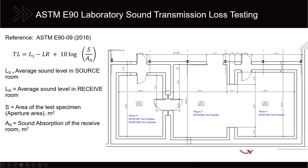Here is a floor plan of our transmission loss facility, showing the nature of the construction of the chambers. In an example where we test a wall assembly in the large opening, we have a source room isolated from the building structure as well as from the receive chamber. Sound is created using a loudspeaker in the source room and measured — averaged over time and spatially — in the source room and then in the receiver room in the same way. That gives the first two properties.